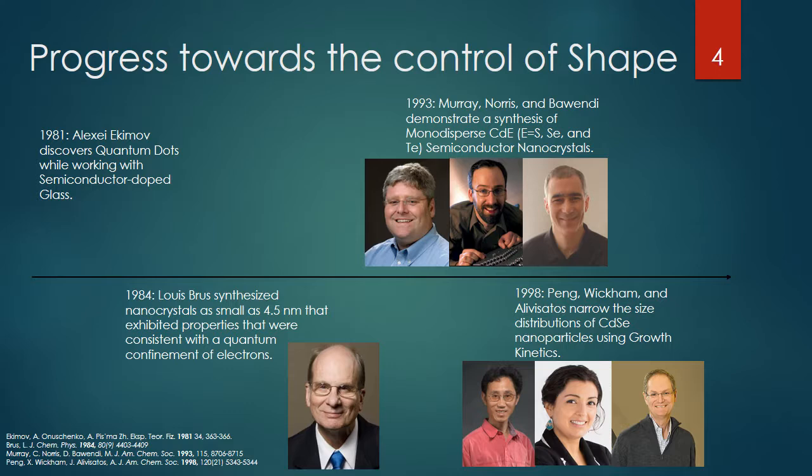This was very critical because having all the particles be the same size basically gives you the same properties. Since size affects properties, if you want to use any of these quantum shapes for applications, they would be most useful if they all had the same properties. So having a good, reliable method to systematically make monodispersed particles is critical to applying these particles toward an application.